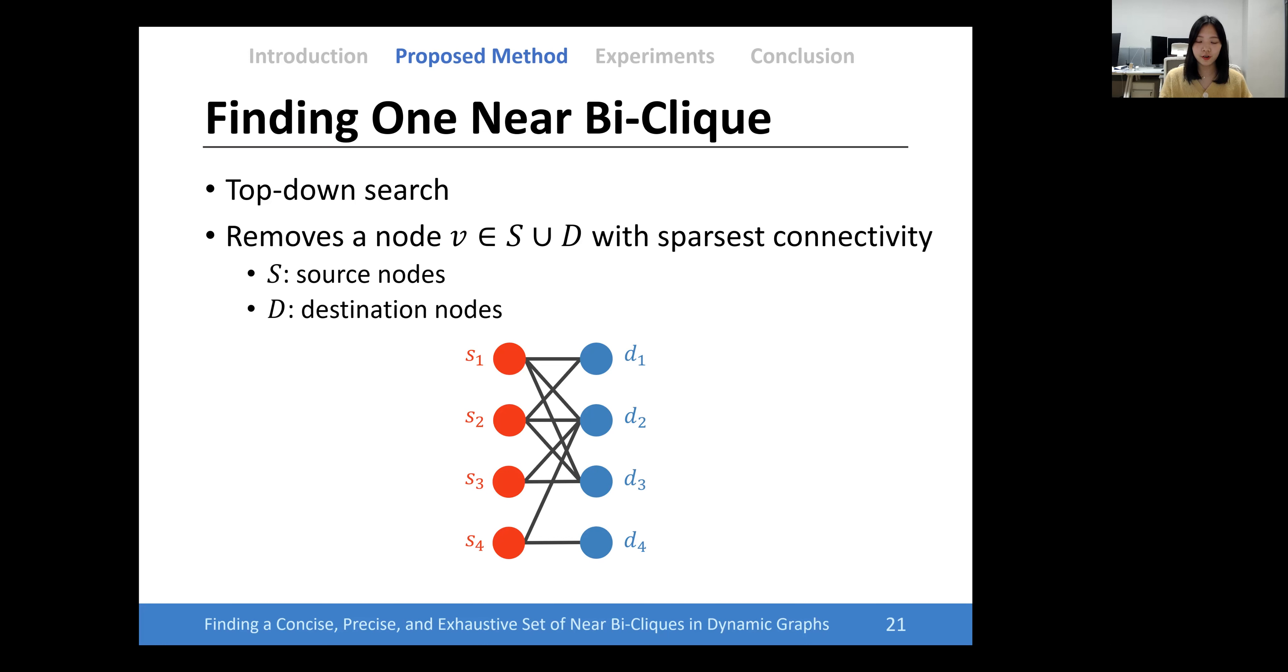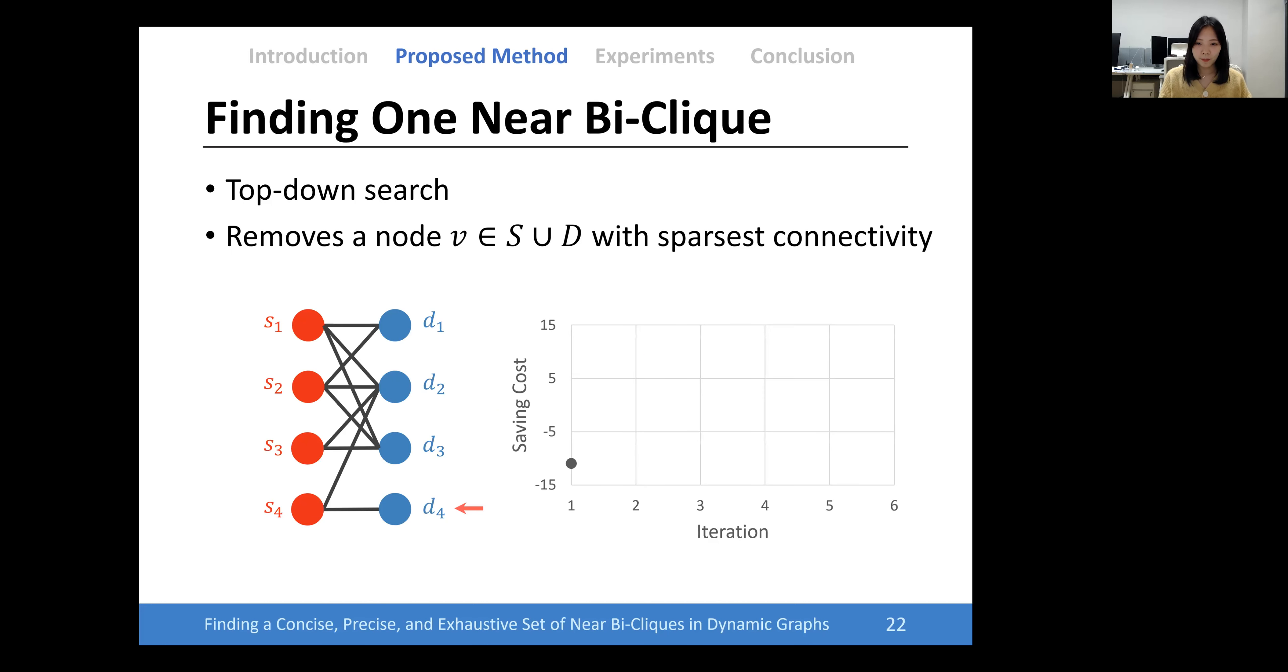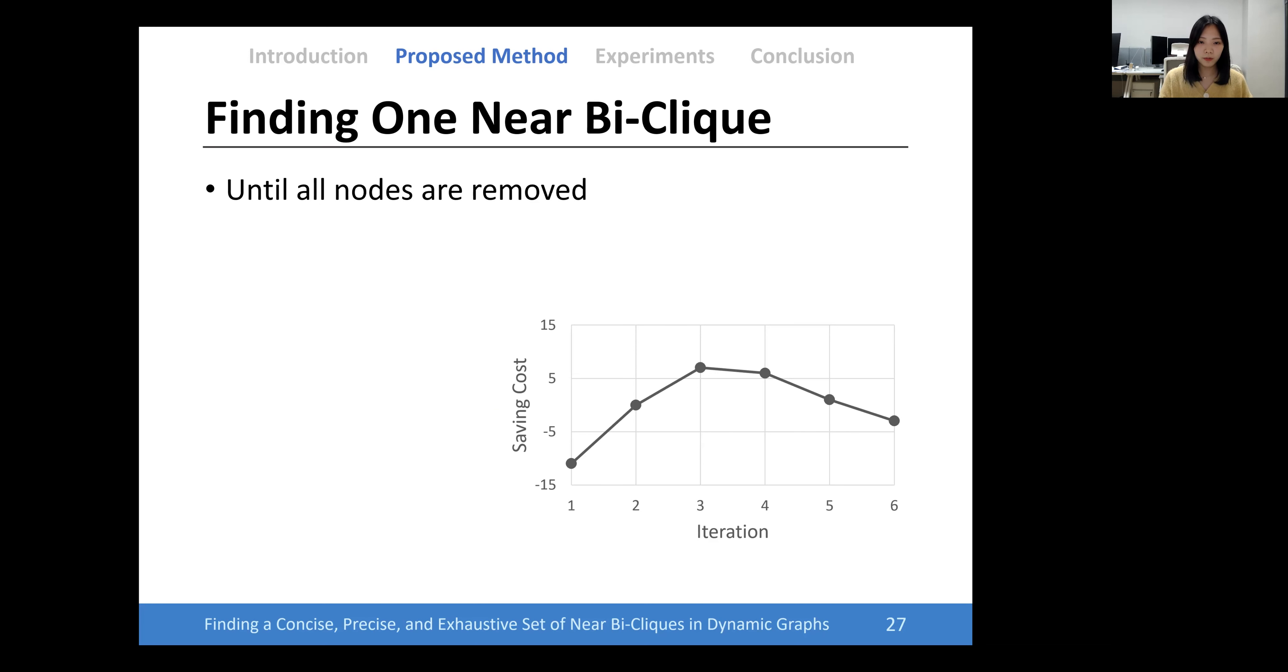Cut and Peel is a top-down search algorithm. It removes a node with the sparsest connectivity in the graph. From the below graph, Cut and Peel repeatedly removes a node with the sparsest connectivity until all nodes are removed. As an output, Cut and Peel returns the snapshot that maximizes the saving cost.